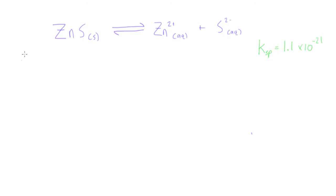So what we have to do here is, first of all, we have to write our ICE table. So I-C-E, just like that. Remember, this is our initial concentration, our change in concentration, and our equilibrium concentrations.